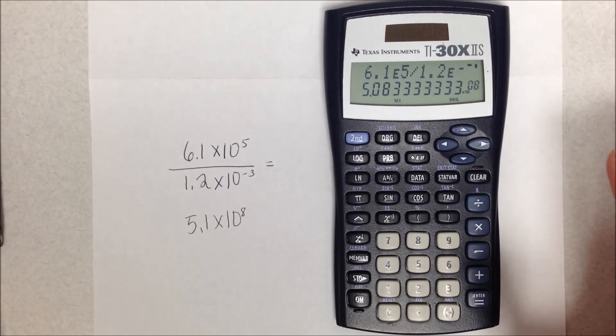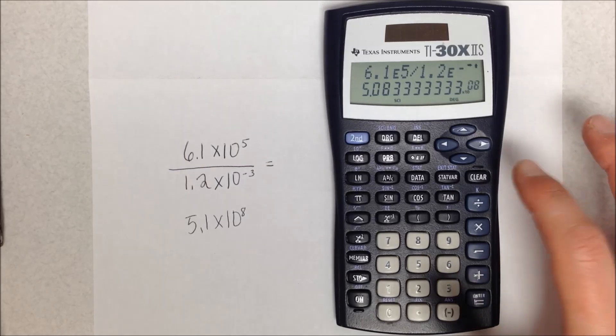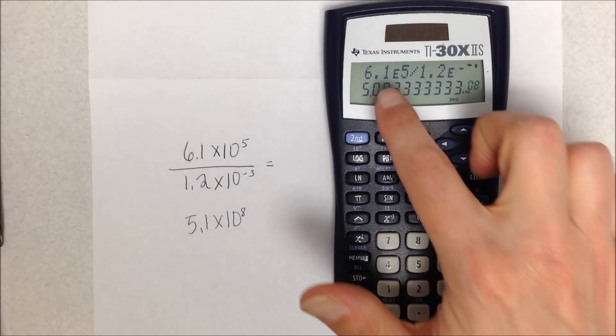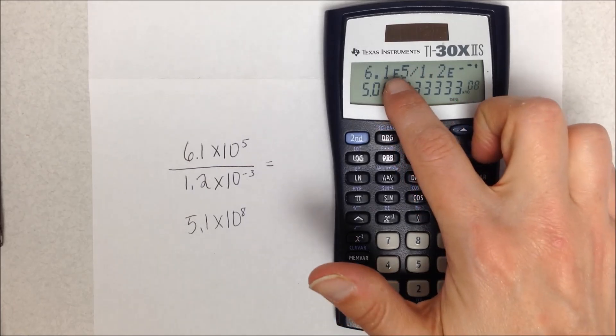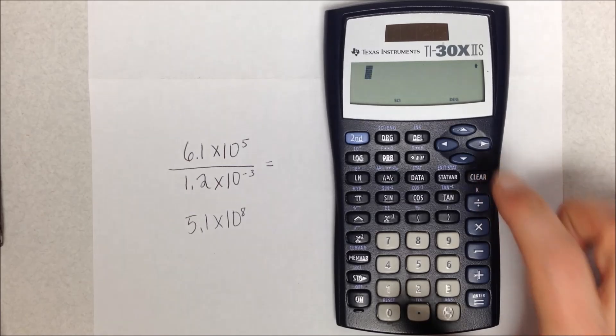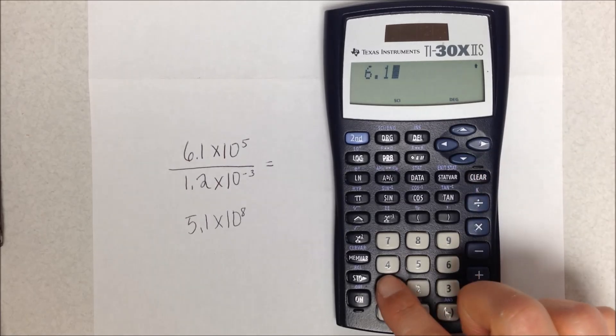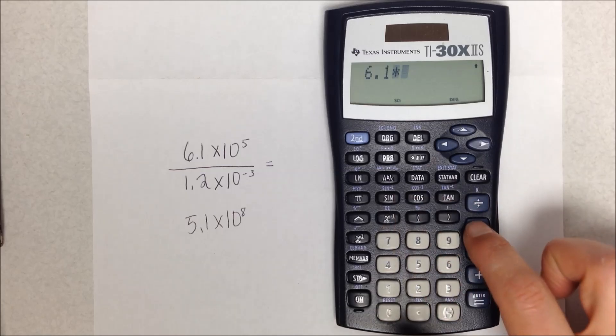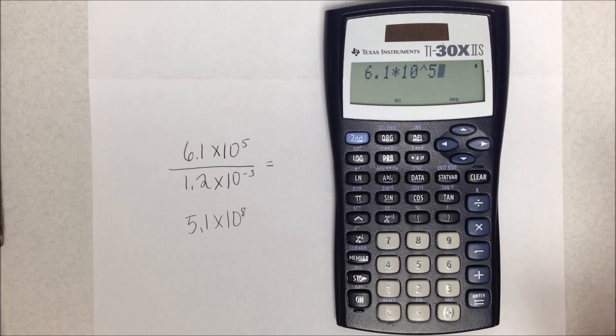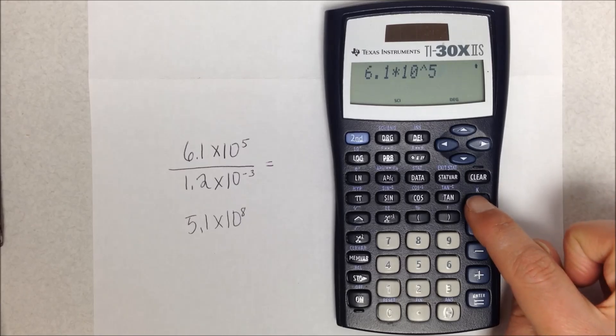So that's the correct way to do the problem. What I want to show you is how you don't want to do this, because I want you to see that there is a difference in the answer. So here we've used the EE function, our scientific notation, to show these values. Let's look at what happens if instead of using the EE button, I use times 10 to the fifth. Now for the numerator it doesn't make a big deal; however, we're going to run into a problem with our denominator. I'm going to hit divide—1.2 times 10 to the minus third.